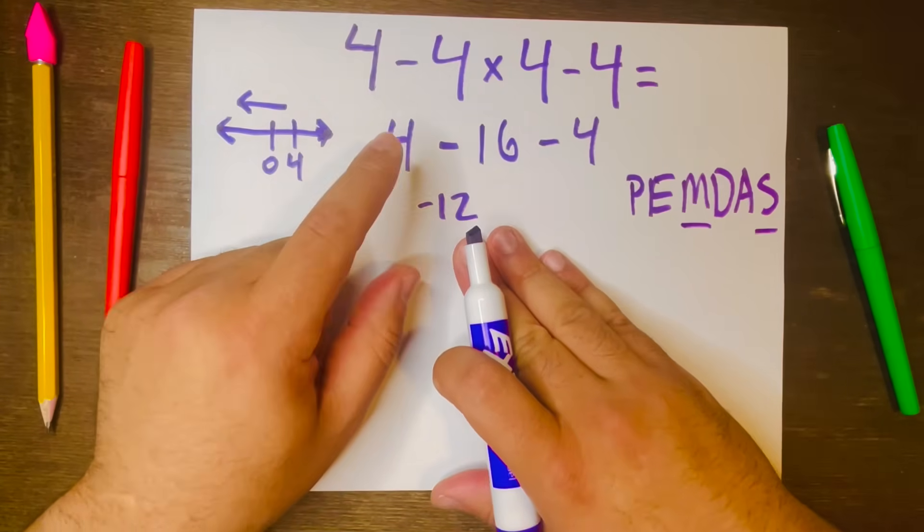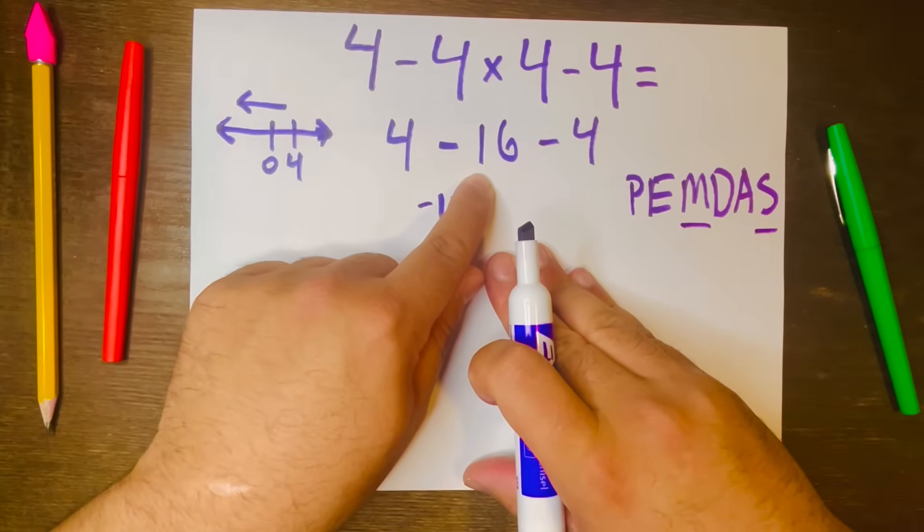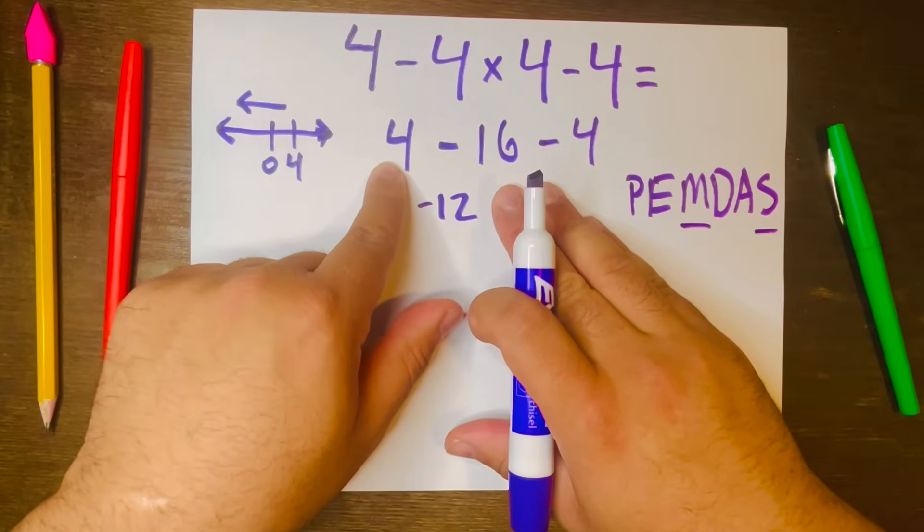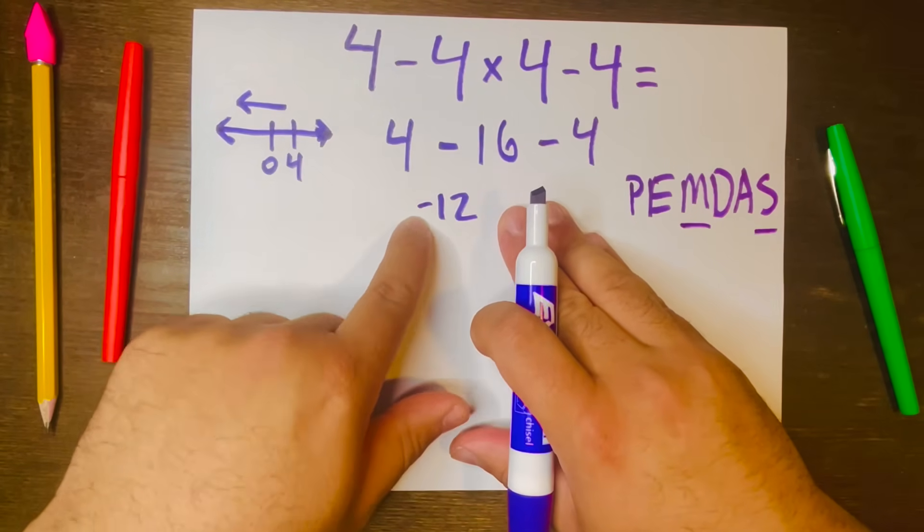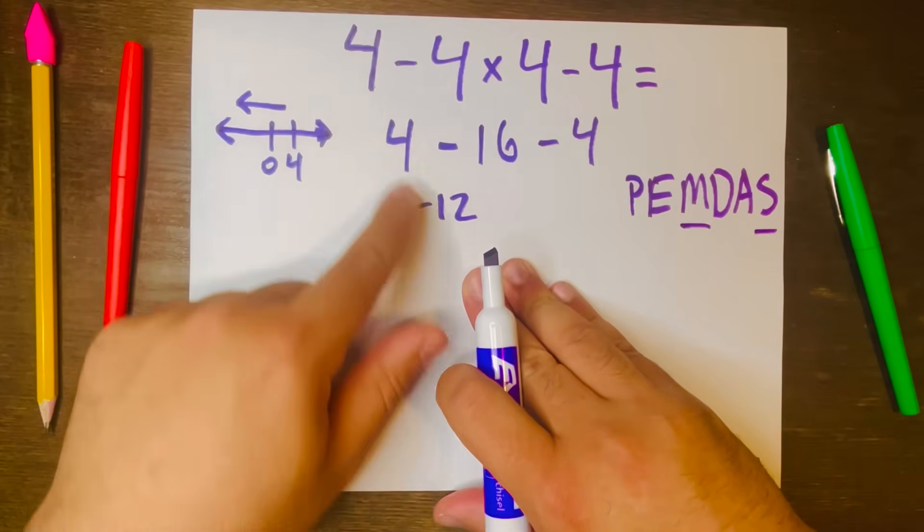Or you can think about money. If you got four dollars and you owe money to somebody—let's say you need to pay them 16 dollars—you only got four, you still owe them 12. And that's why we have a negative sign, because you still owe money. So that's another way to look at it.